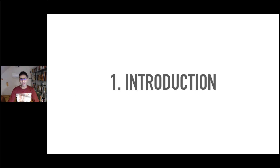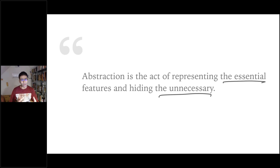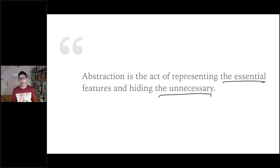Let me start by defining what abstractions are. Abstraction is the art of representing the essential and hiding the unnecessary. The two important words are: essential and unnecessary. Abstraction is really about purposefully suppressing or hiding details of a process or document in order to bring out more clearly other aspects and details of structure. The reason we do this is that it allows us to focus attention on details of greater importance. But why is this concept important for software design?